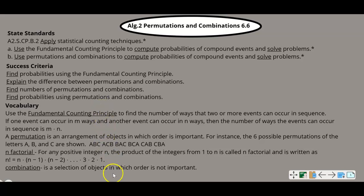Some new vocabulary terms you need to be aware of. First is the fundamental counting principle. The fundamental counting principle is used to find the number of ways that two or more events can occur in a sequence. If one event can occur in N ways and another event can occur in N ways, then the number of ways the events can occur in a sequence is N times N.